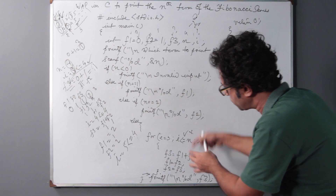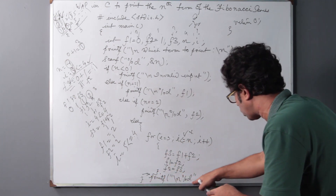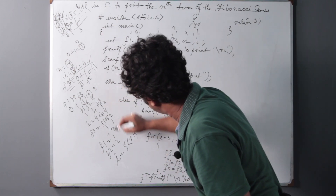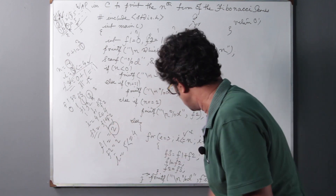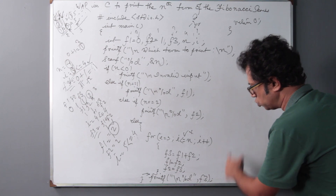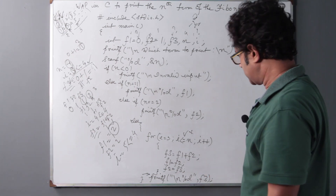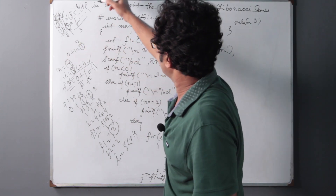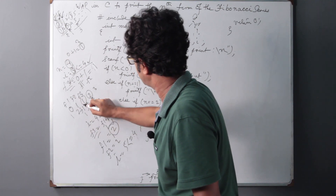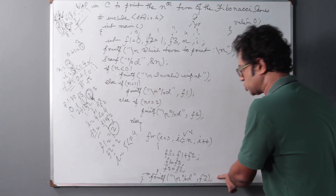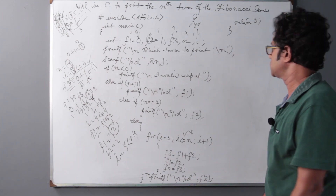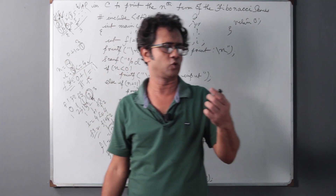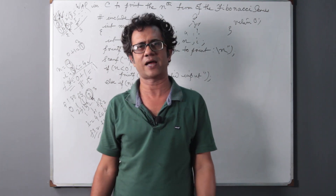We come out of the loop and the program control goes to the printf statement. The last value of F3 is 2, so the output is 2. Let's verify: the fourth term of the Fibonacci sequence is 0 (first), 1 (second), 1 (third), 2 (fourth) — so the fourth term is indeed 2. The program is correct and will run on your computer. Thank you for participating in this program explanation. If you have any doubts, put them in the comments below.